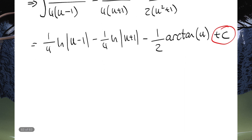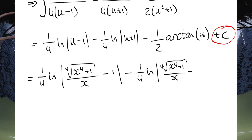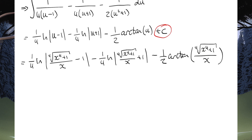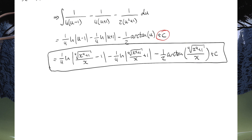Now all we've got to do is undo the substitution, where u = (x⁴+1)^(1/4) / x. This gives us: 1/4 · ln|(x⁴+1)^(1/4)/x - 1| minus 1/4 · ln|(x⁴+1)^(1/4)/x + 1| minus 1/2 · arctan((x⁴+1)^(1/4)/x) plus C. And there we have it — that is the final answer, the result of this integral.